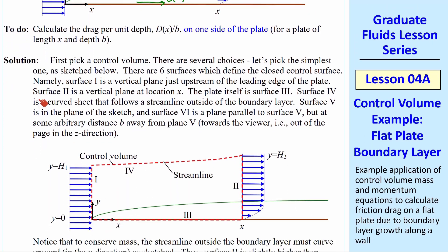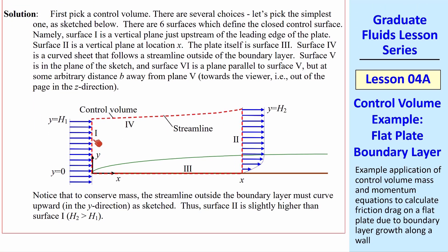The first part of the solution is typed up to save time. We picked the control volume as shown, with surfaces 1, 2, 3, and 4, plus two more in and out of the plane (surfaces 5 and 6). The top surface follows a streamline, which makes our algebra easier. This streamline veers upward to conserve mass, because the boundary layer portion doesn't carry as much fluid. Our coordinate system is X, Y, and Z out of the plane.